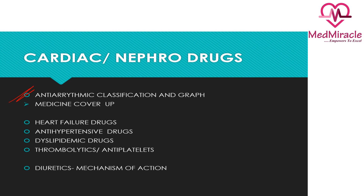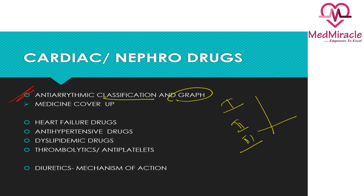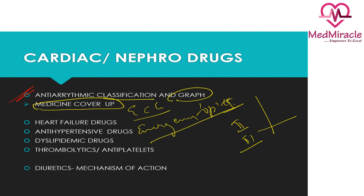Now coming to cardiac and nephro drugs, anti-arrhythmics is an important section. Know the classification and the graphs showing how Class 1, Class 2, and Class 3 drugs act, and the changes they bring to the heart waveforms. You can cross-check with ECG topics from emergency medicine so that if a question provides an ECG and asks for the drug of choice, you can answer easily. A medical cross-referencing approach is required for this topic.